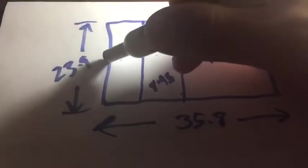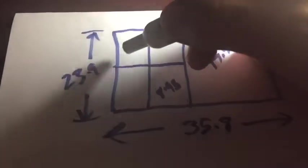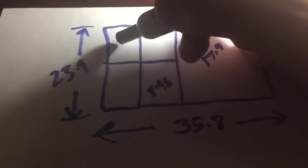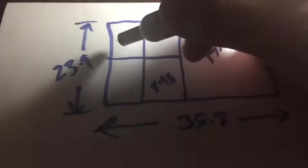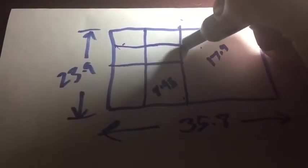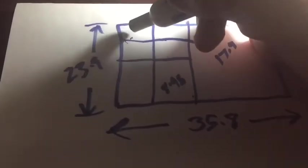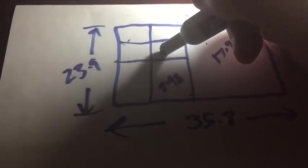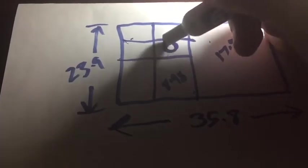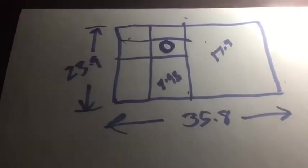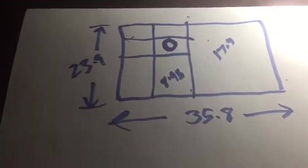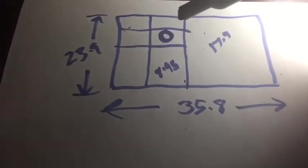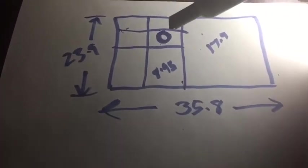23.9 in half gives us 11.95 here, 11.95 here. Cut that in half again — it's around 5.97. So our image of the moon with a 500 millimeter lens is going to be about this big on a full frame Canon 6D. 500 millimeter focal length divided by 109 gives you 4.58 millimeters.